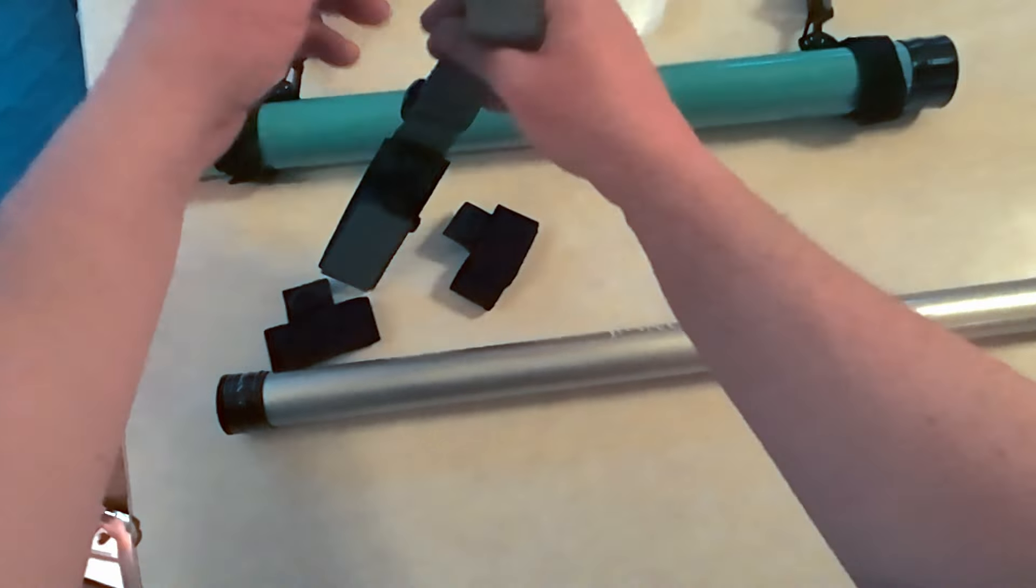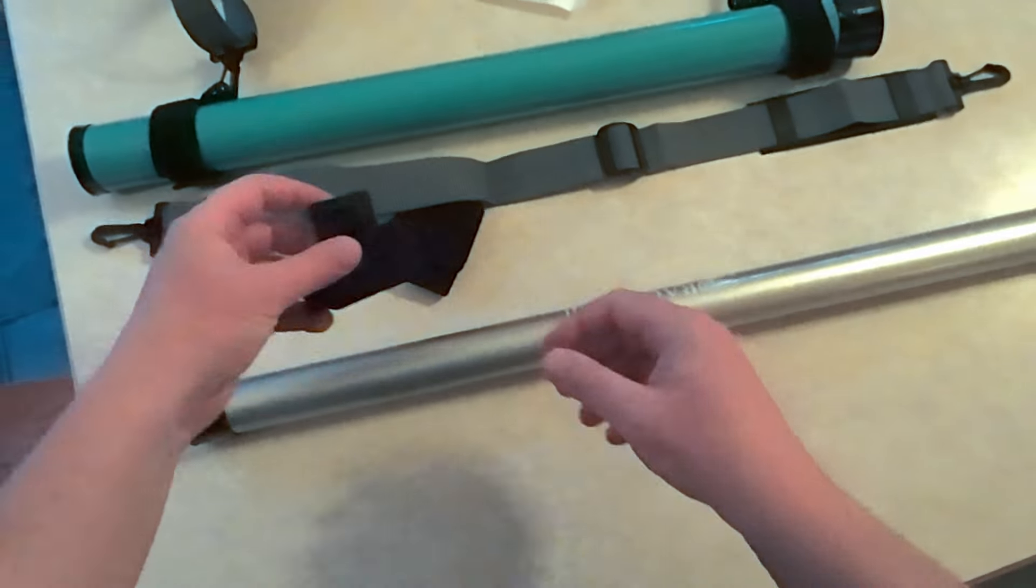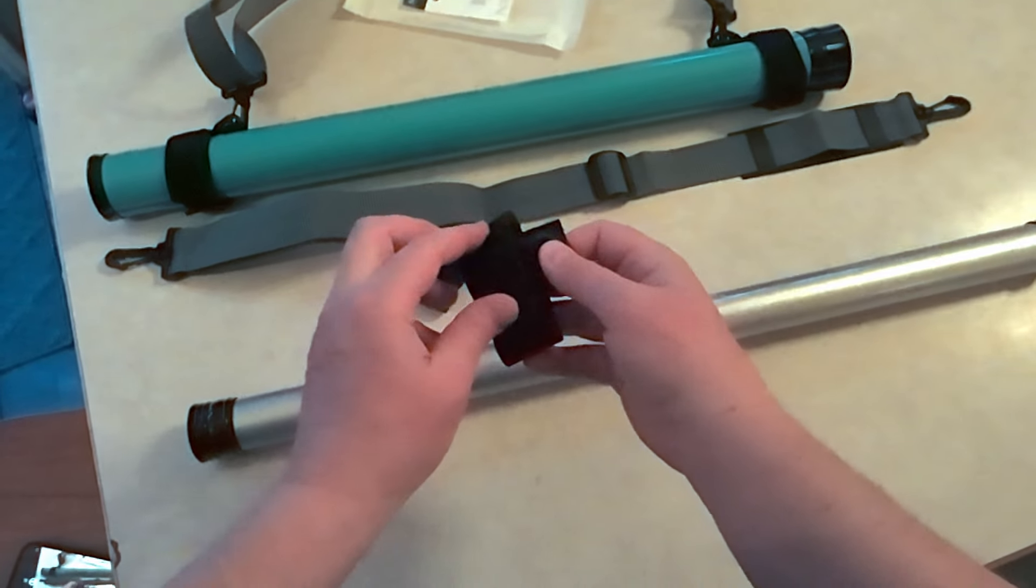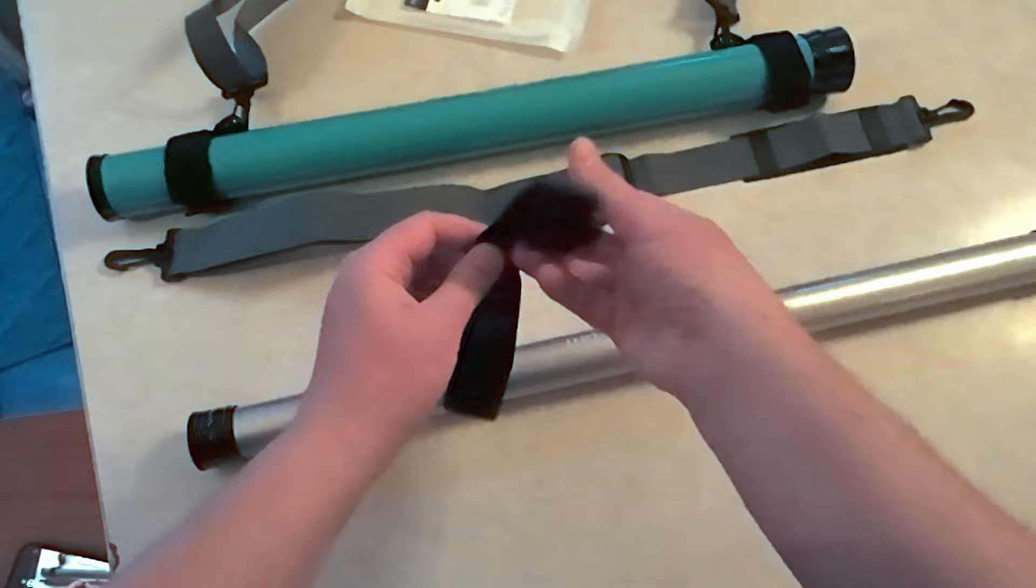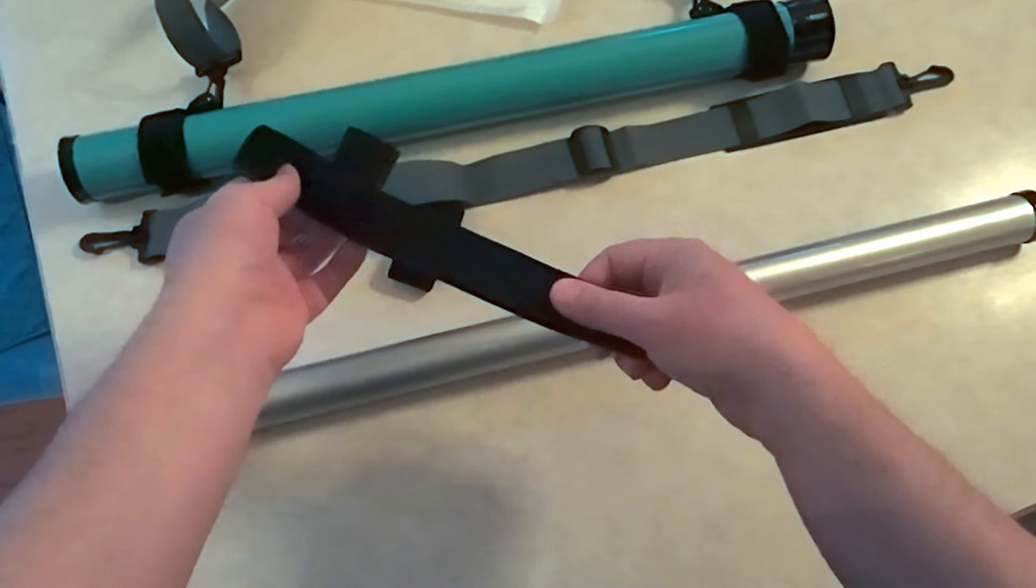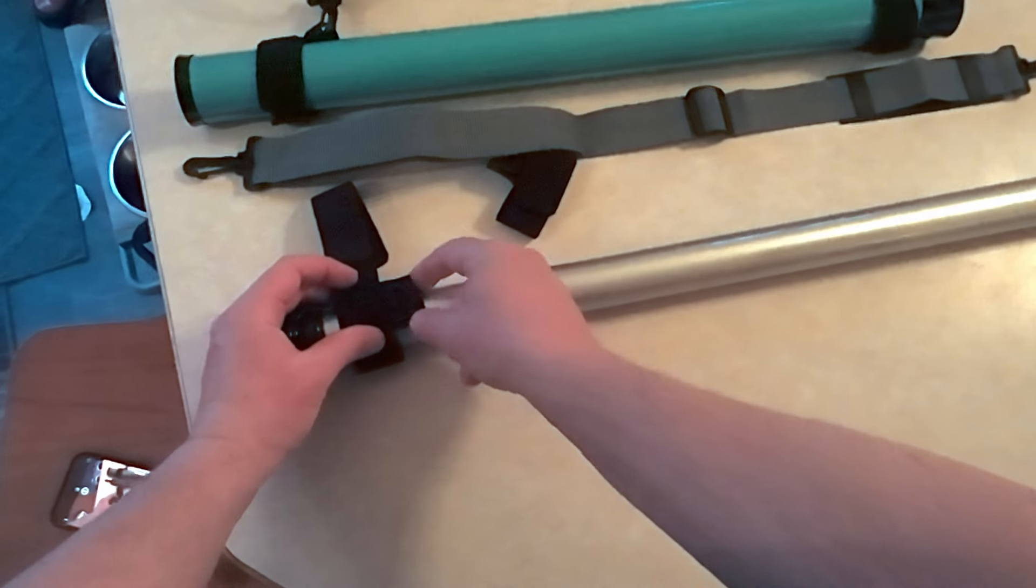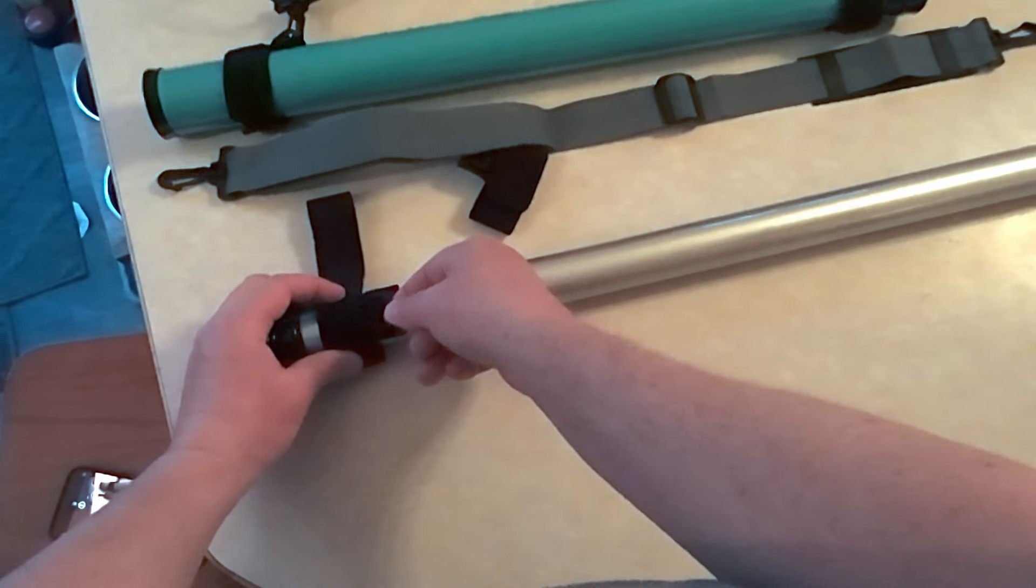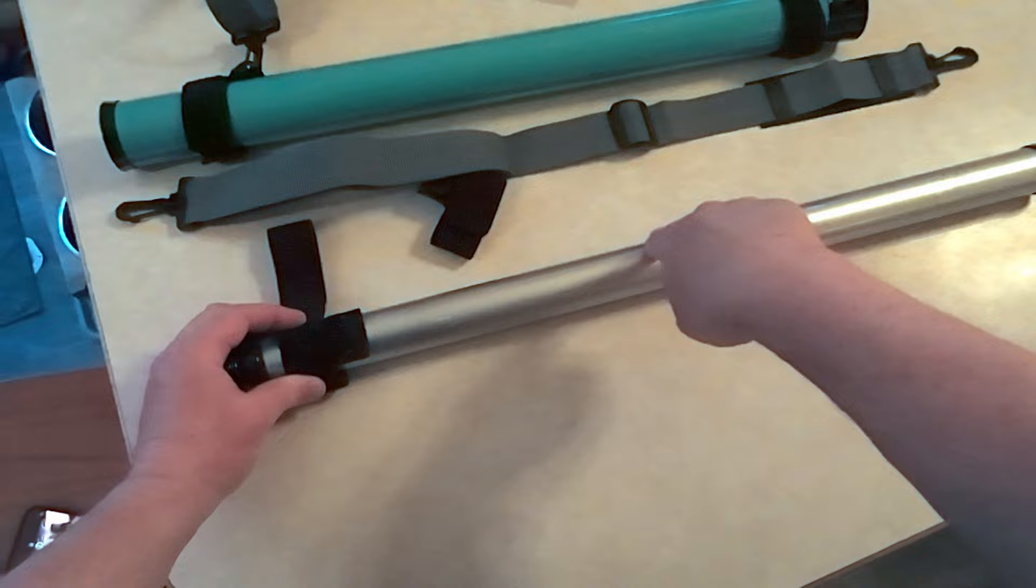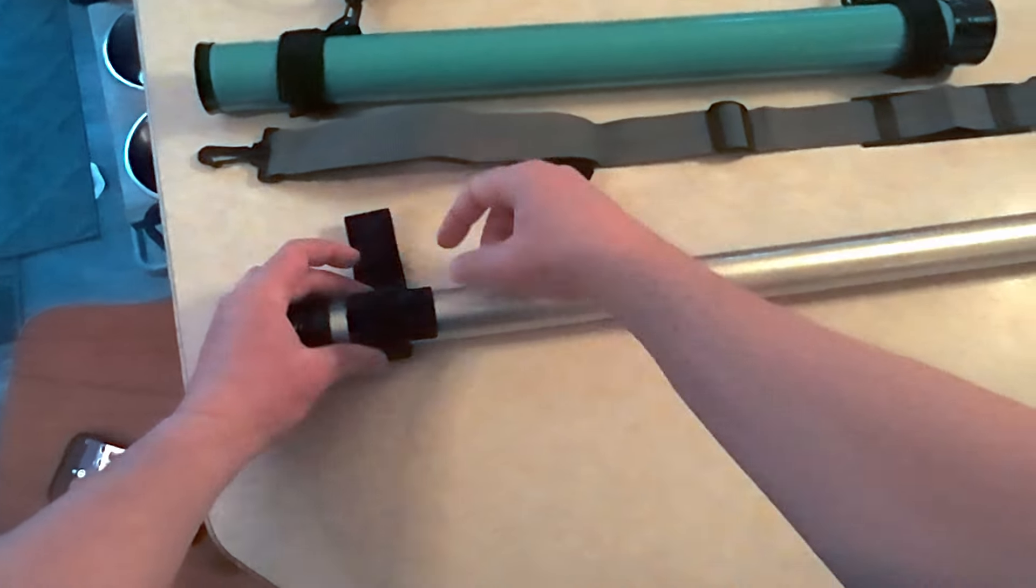It comes with three pieces: your strap here and then these that go on your rod. There's a rubber grip on the inside of this, so you're going to put one on one end and you want this loop clip right here to be facing on the inside, not towards the end cap.